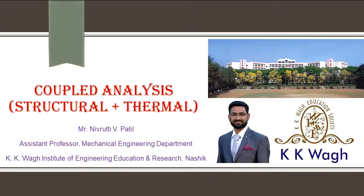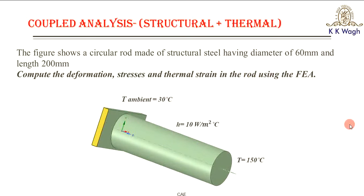Hello friends and welcome to this video tutorial. We are going to carry out the coupled analysis — the combination of structural and thermal. We are having a circular rod made of structural steel with a diameter of 60 mm and 200 mm length. The ambient temperature is 30 degrees Celsius, it is fixed at one end, and the other end is at 150 degrees Celsius. The heat transfer coefficient is 10 W/m²·°C. We have to calculate the total deformations, stresses, and thermal strain using ANSYS Workbench.